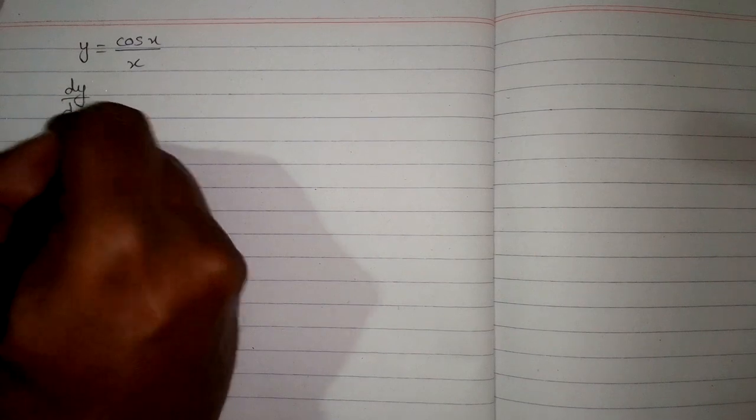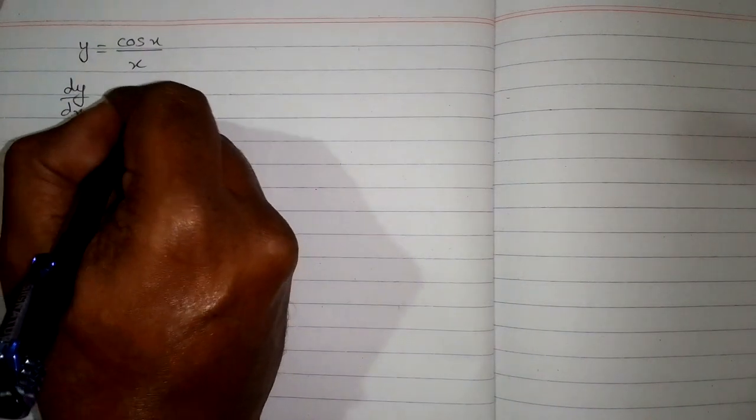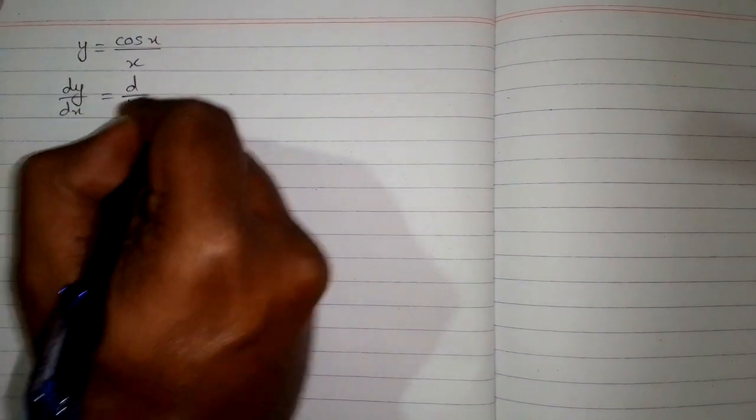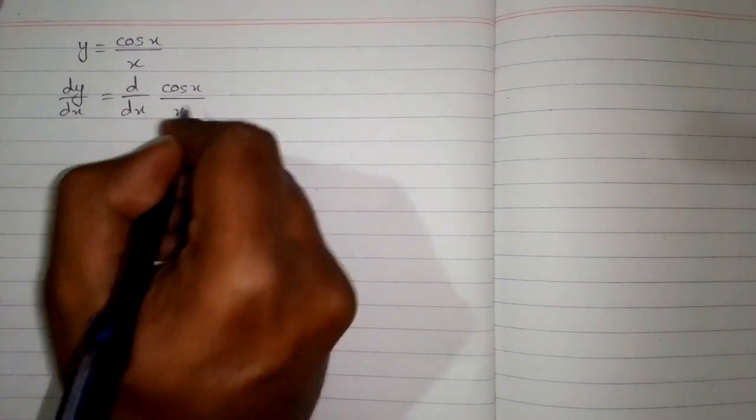In this video we will find the derivative of the function y equals cos x upon x. First of all we will differentiate both sides with respect to x. So we have dy/dx is equal to d/dx of cos x upon x.